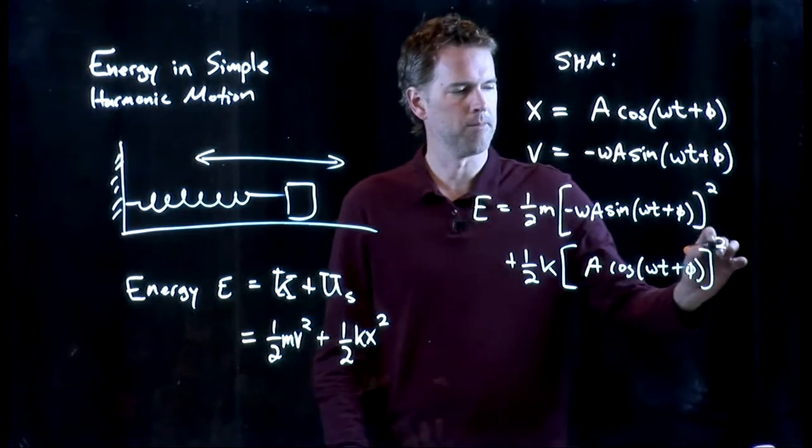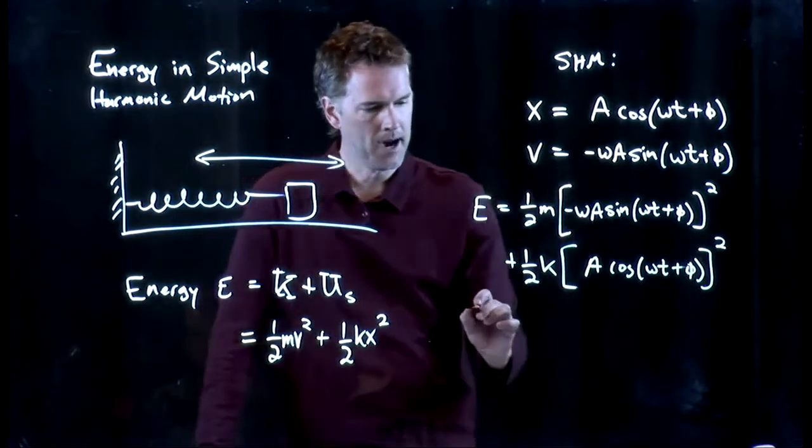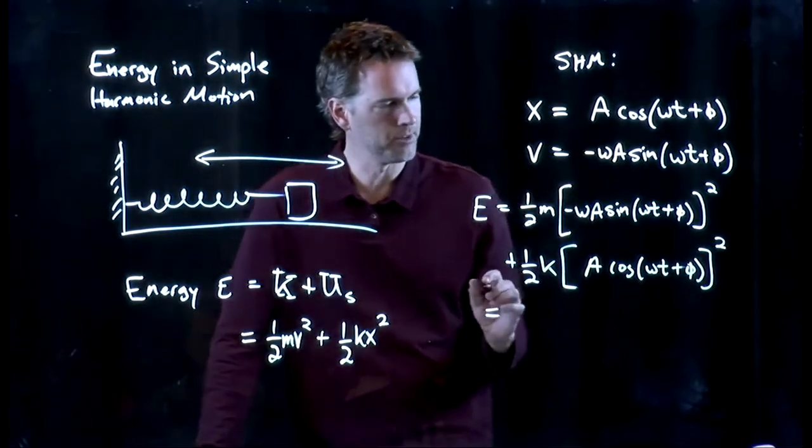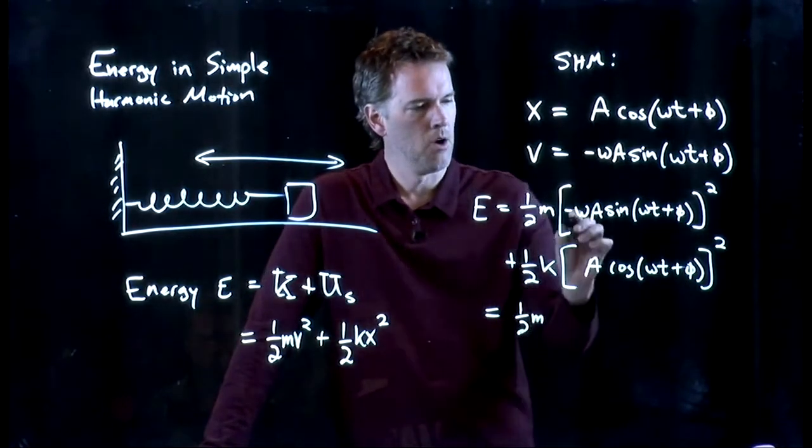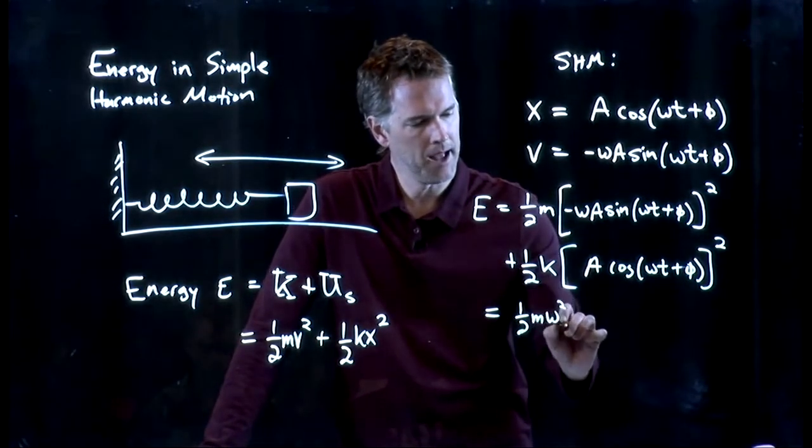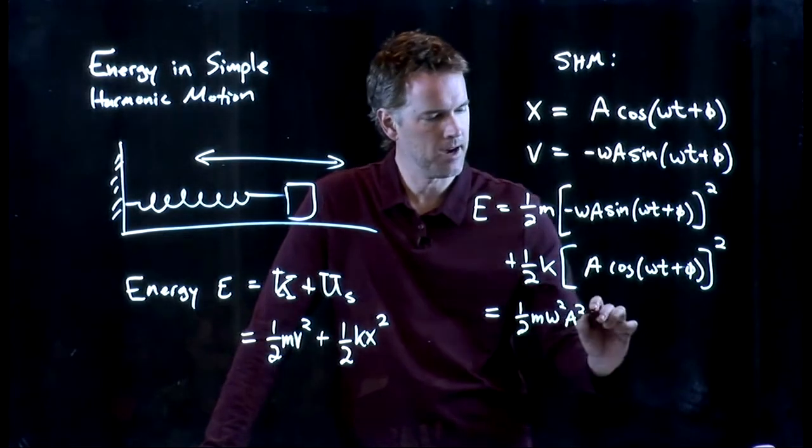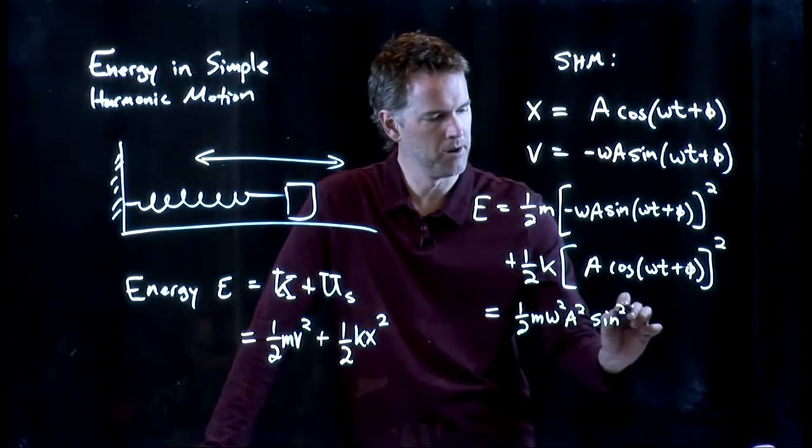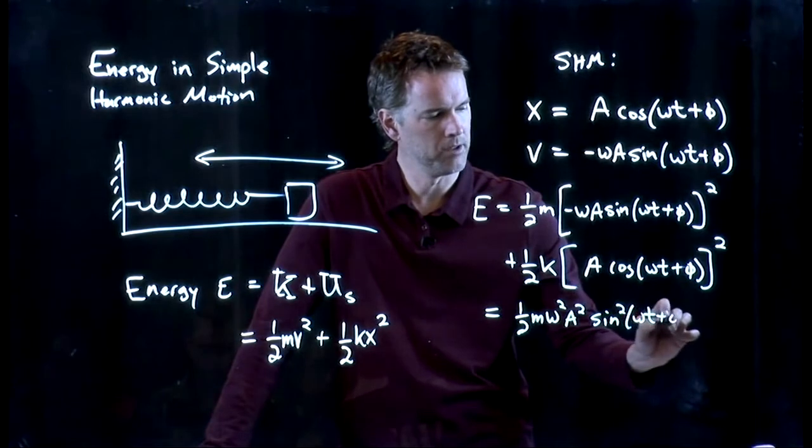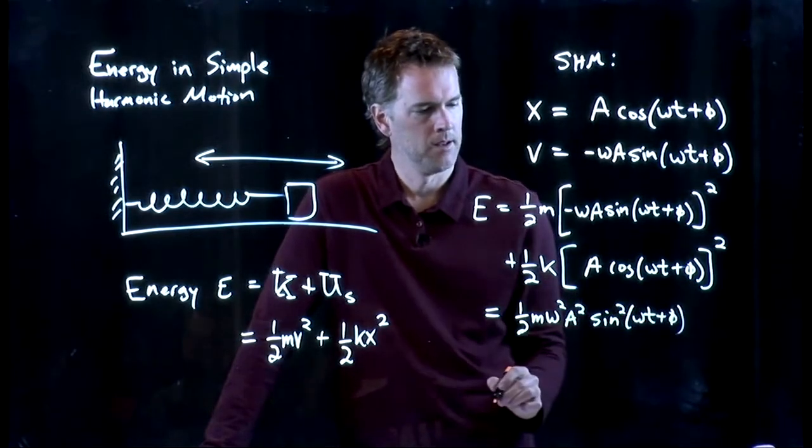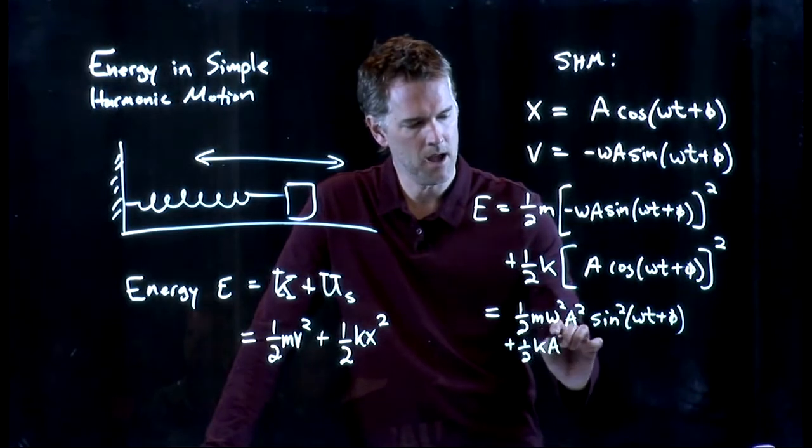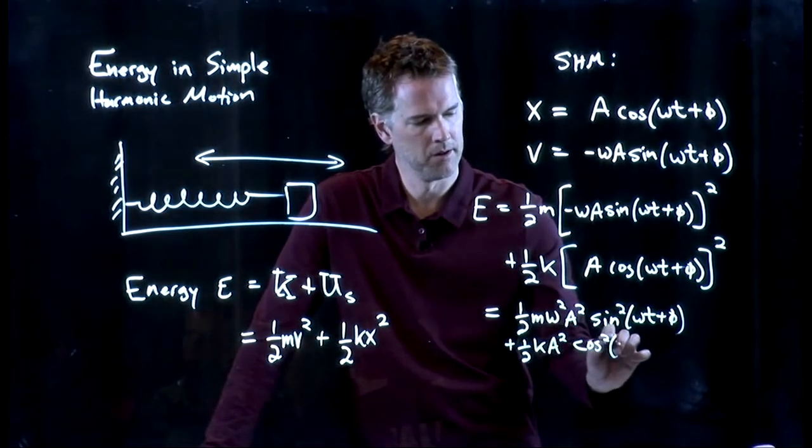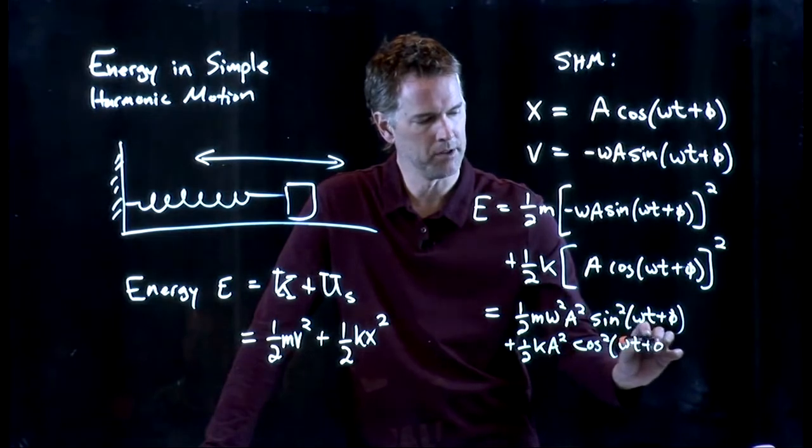And now we can write out this stuff, right? We've got one-half m omega squared A squared times sine squared of omega t plus φ. And then the next one is one-half k A squared cosine squared omega t plus φ.